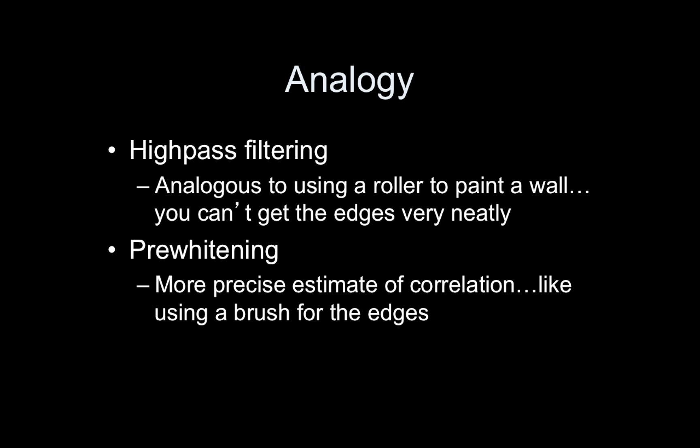The analogy I like for combining high-pass filtering and pre-whitening is painting a wall. You use a roller to paint large areas of the middle of the wall very quickly — that's what the high-pass filter does, removing a bunch of noise in one swoop. But near the edges, the floorboards and ceiling, you go in carefully with a paintbrush. That's what pre-whitening does — it picks up what's left behind from the rolling.